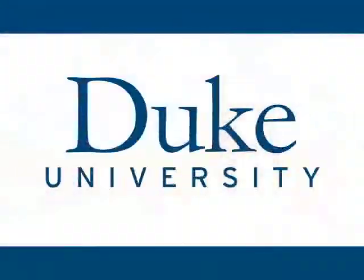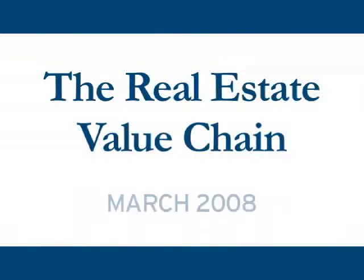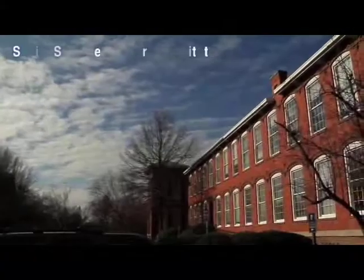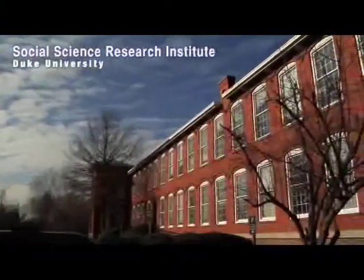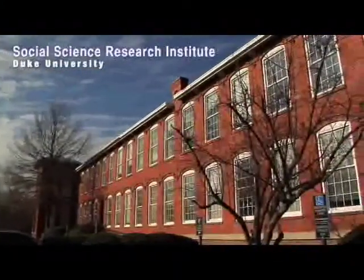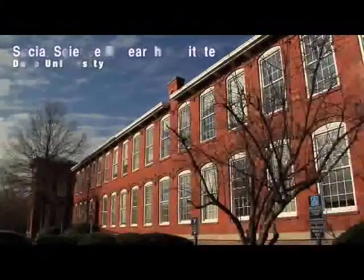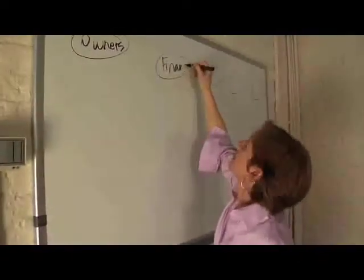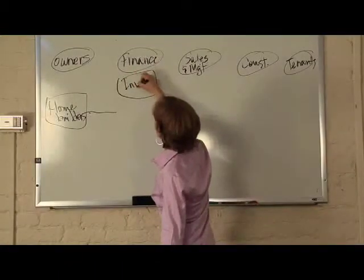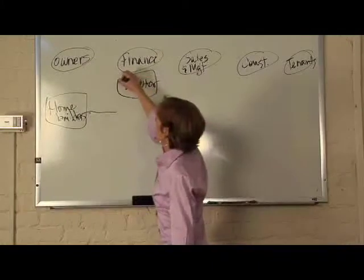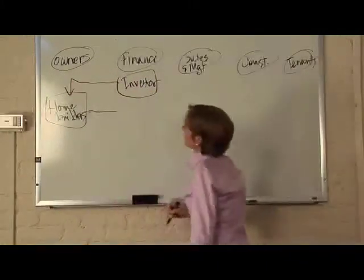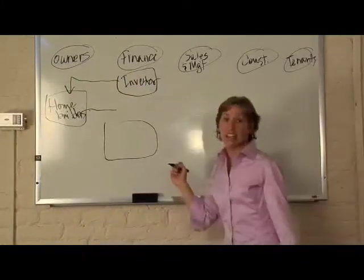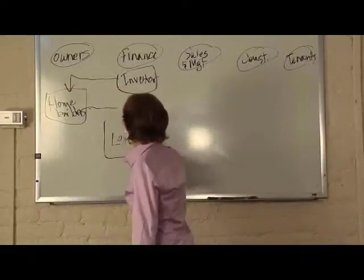This is Duke University. We'll put up the five categories for different segments that we found are important for the value chain — owners, finance. Global value chain analysis is a cornerstone of the center on globalization, governance, and competitiveness.